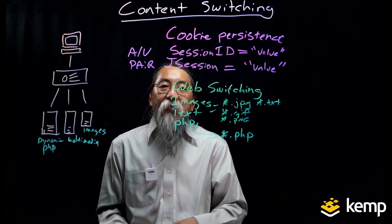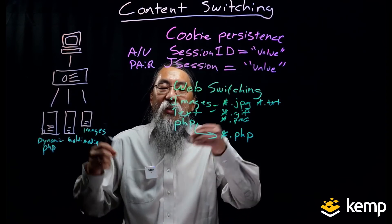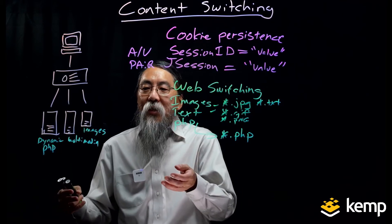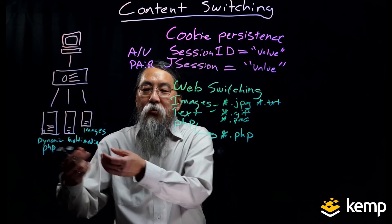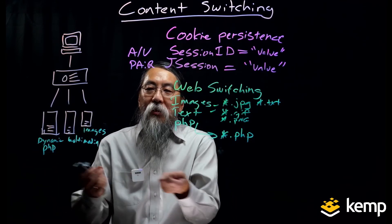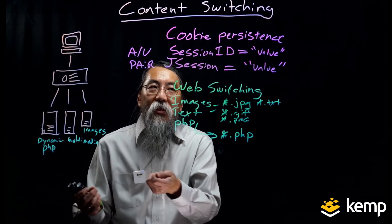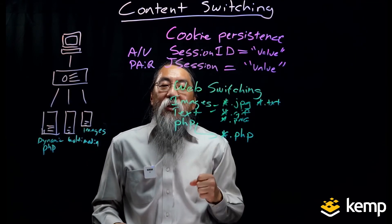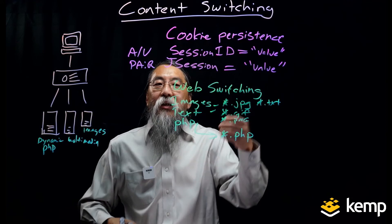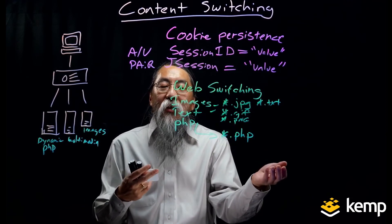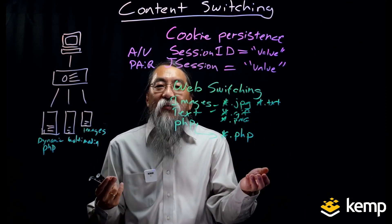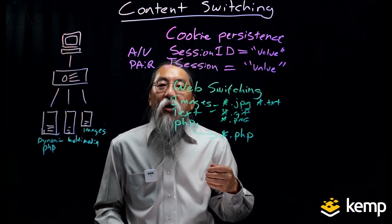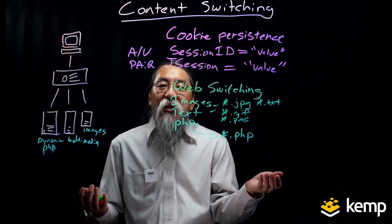So content switching is all about looking at the specific content in the request from the client, going through a single virtual IP to different pools of servers behind it for different purposes. It can be very useful for persistence reasons — looking at cookies — or for content-based routing, looking at content type. You can apply this to lots of other applications and protocols as well.